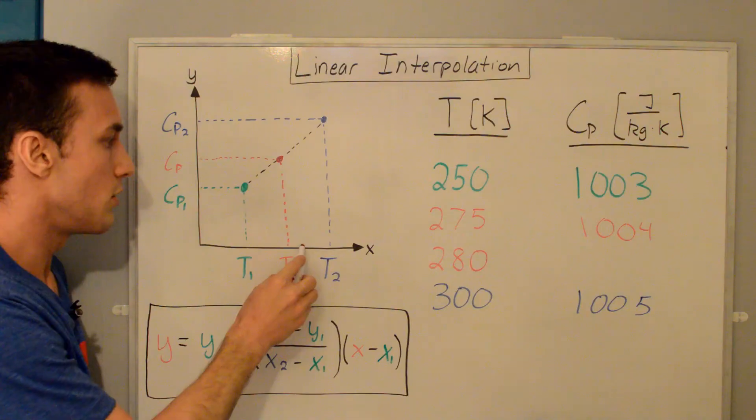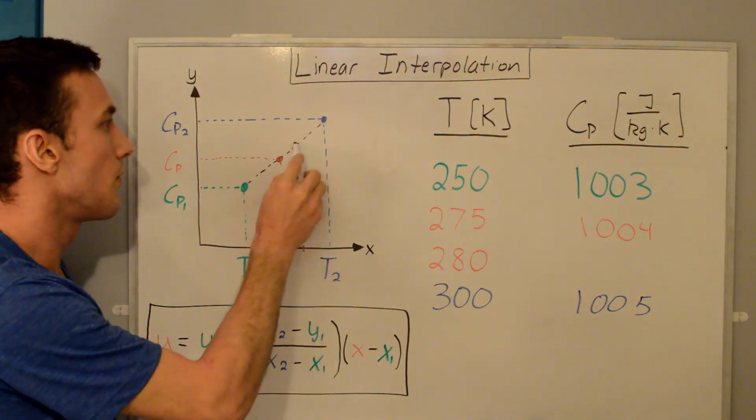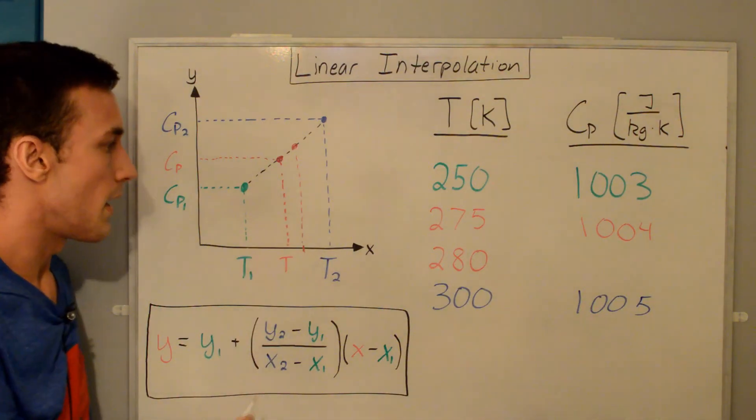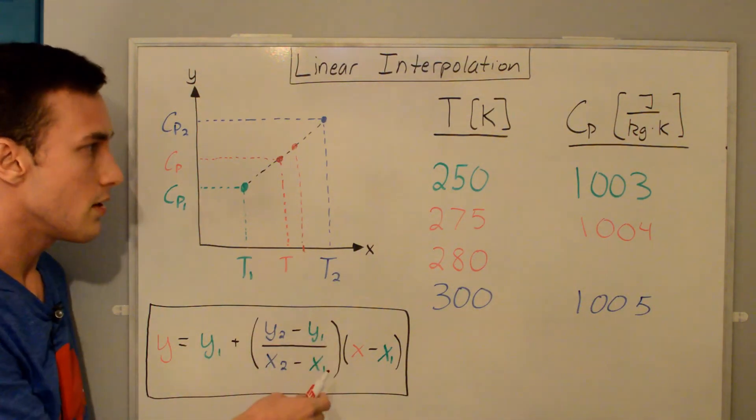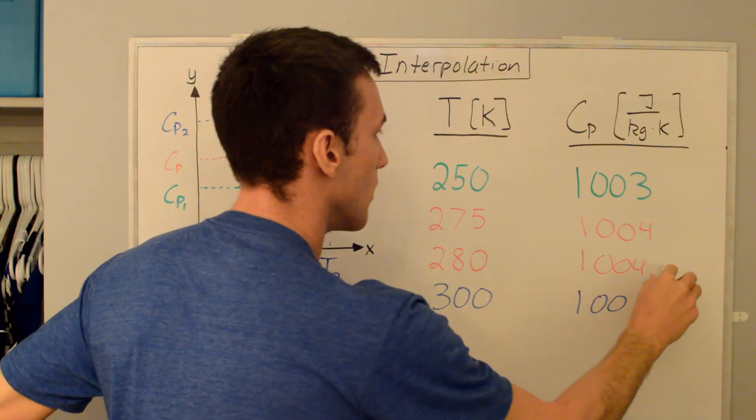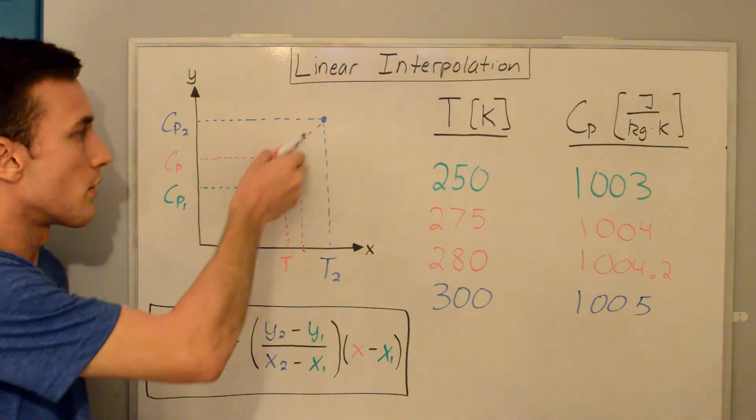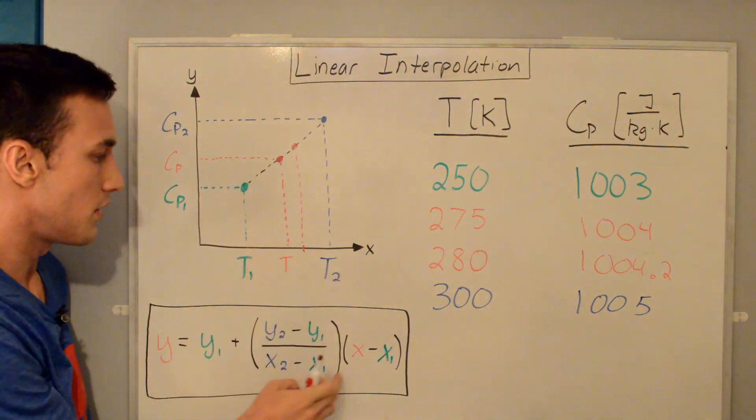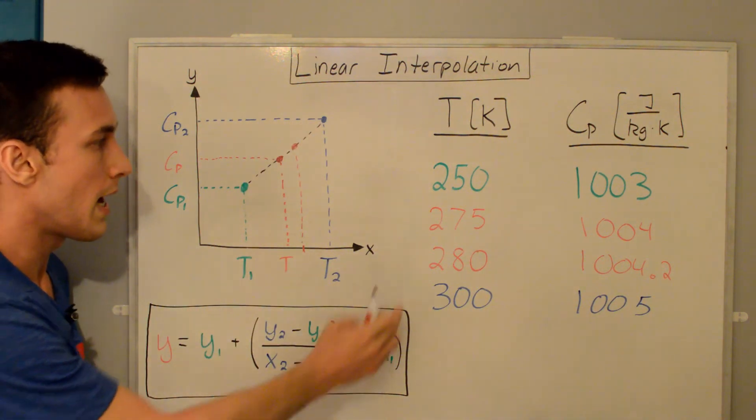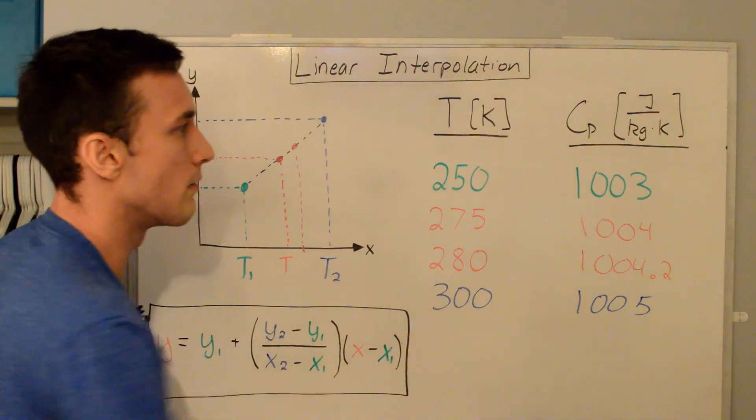Now, let's say we wanted it at 280, which will be somewhere around here, right here. This is at 280. We can again plug the values in here, and you end up getting a value of 1004.2, which makes sense because you're a little bit farther up on this line. Your delta, your t minus t1 is a little bit higher. It's 30 now instead of 25. So, you end up getting a little bit of a higher value here.